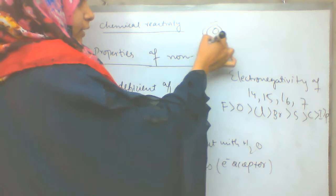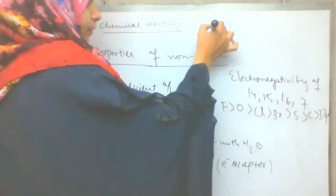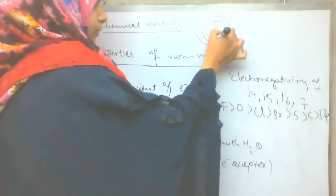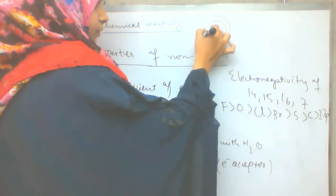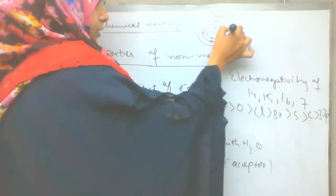This is a chlorine atom. The first shell is 2, the second is 8, the third is 7.